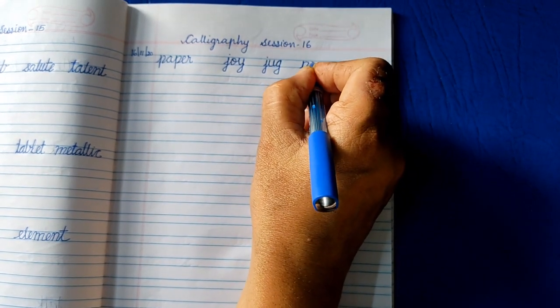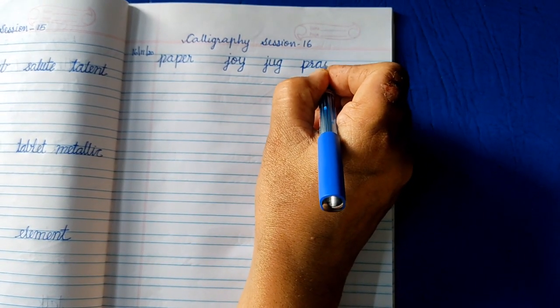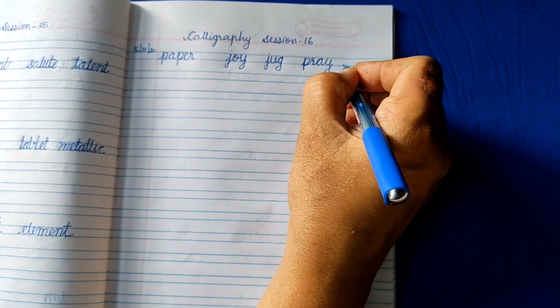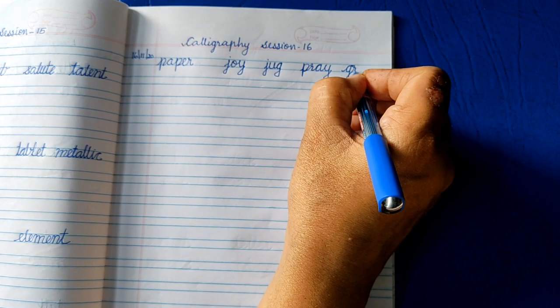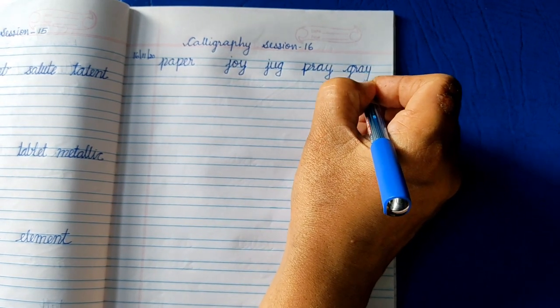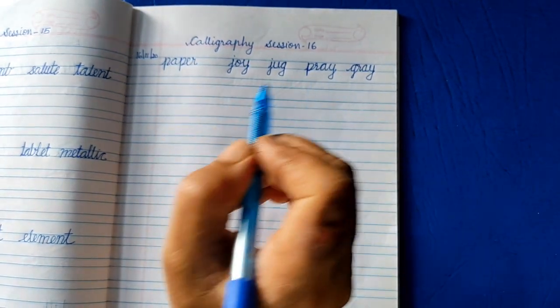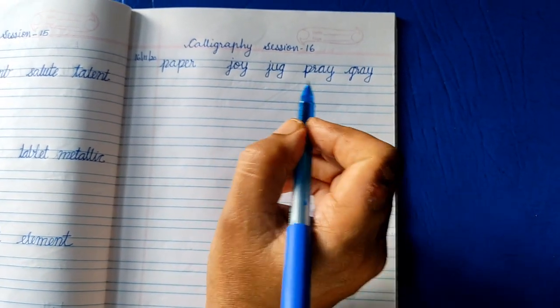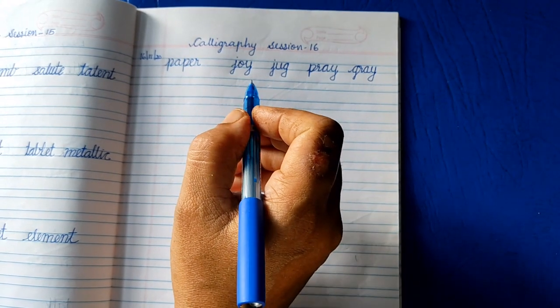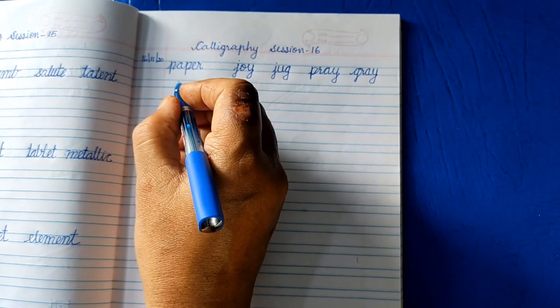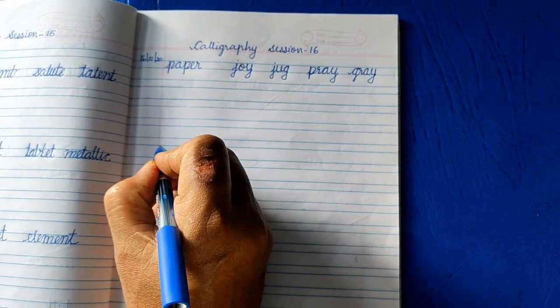P-R-A-Y, pray. G-R-A-Y, gray. Only three and four letter words. So I wrote five words in a line. Inquiry - next word is inquiry. Three lines you leave, then we'll write.